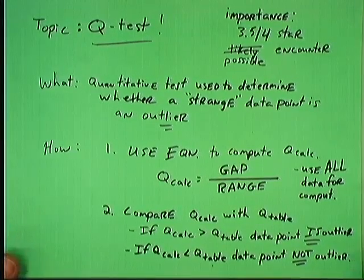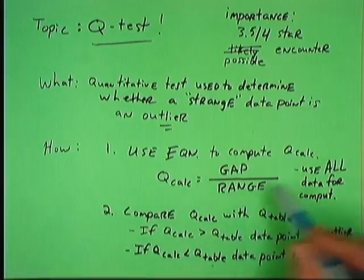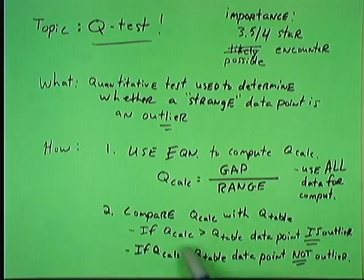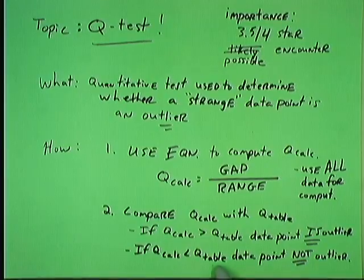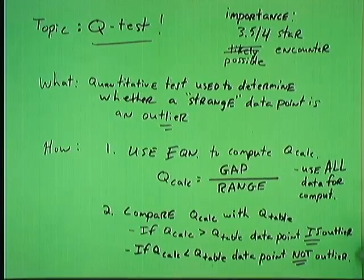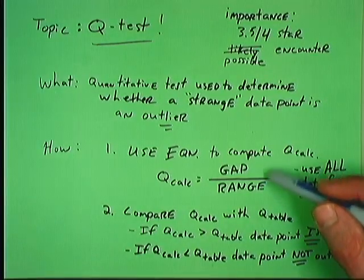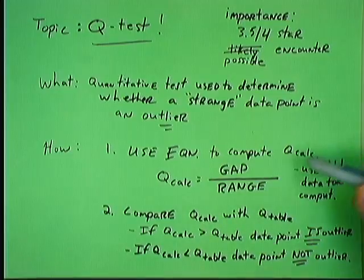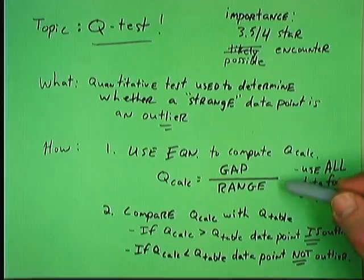Now, how does this work? We are going to compute something called Q-Calc. Here's the formula for Q-Calc. And then we're going to compare Q-Calc with a tabular value. If Q-Calc is bigger than the tabular value, the data point is an outlier, and we're able to throw it out. If Q-Calc is smaller than the tabular value, the data point is not going to be an outlier, and we're not going to throw it out. Okay. If we look at the form of the equation here, I haven't written it out in mathematical symbols, but instead I've written that Q-Calc is equal to gap divided by range. I've used some words here. We'll see what that means in a second. It makes a lot of sense.